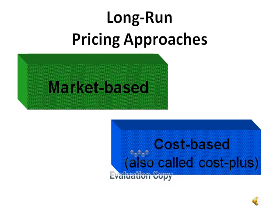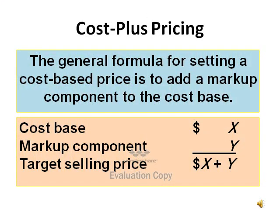There are two approaches in long-run pricing decisions: market-based and cost-based. Market-based depends on competitors and customers, while cost-based or cost-plus depends on cost. We will focus on cost-plus pricing. The general formula is to add a markup component to the cost base — meaning cost-based plus markup component equals target selling price. For example, if the cost per unit is 10 pounds and markup is 2 pounds, the target selling price is 12 pounds.